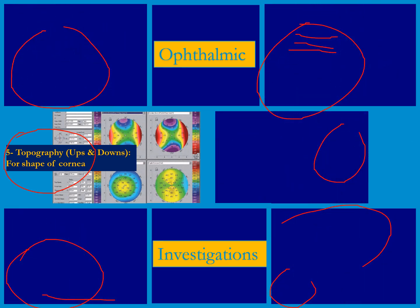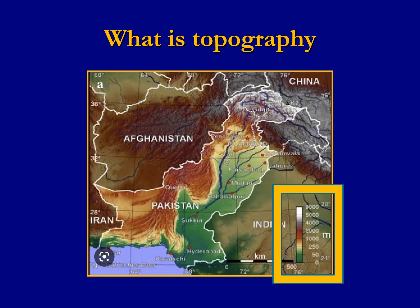In this video, we'll talk about topography to see the ups and downs in the cornea and to see the shape of the cornea. So what is topography? This is the topography of Pakistan. This is the scale to show the heights. Anything shown in green is at sea level. Any area shown in brown is one thousand to two thousand meters high — those are the mountains. The white area is about four thousand to six thousand meters high. So this is called the topography of Pakistan, and the same concept applies to the topography of the cornea, in which you will see the ups and downs in the cornea.